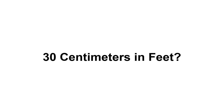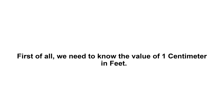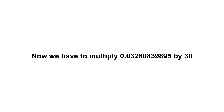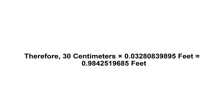30 centimeters in feet. First of all, we need to know the value of one centimeter in feet. One centimeter equals 0.03280839895 feet. Now we have to multiply 0.03280839895 by 30. Therefore, 30 centimeters times 0.03280839895 feet.